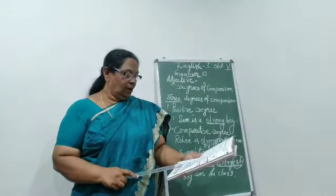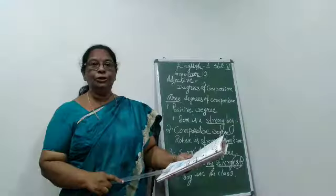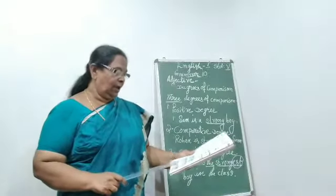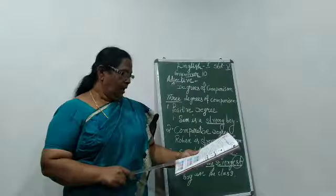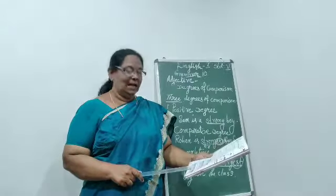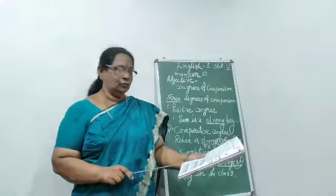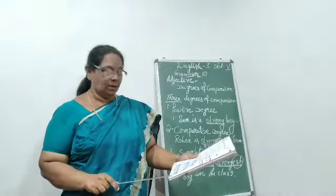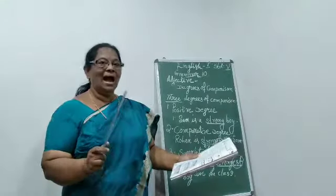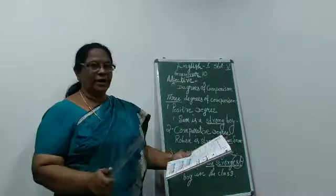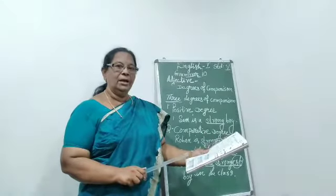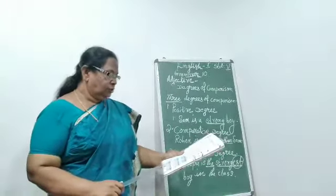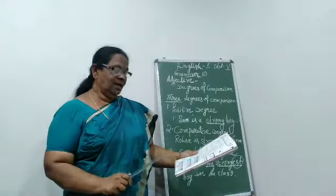Third rule: adjectives ending in a consonant plus 'y' — change the 'y' to 'i' to form comparative and superlative. We never keep 'y' there; instead we use 'ier' and 'iest'. Like: lucky, luckier, luckiest — there is no 'y' in the comparative or superlative forms. Heavy, heavier, heaviest. Instead of 'y', we use 'i'. Don't forget that, because you will always make mistakes there.